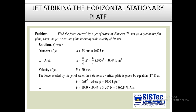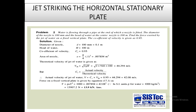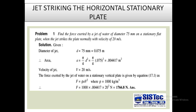Using the formula F'x = ρ·A·v₀²: F'x = 1000 × 0.004417 × (20)² = 1766.8 N. This is the force exerted on the stationary flat plate by the jet.